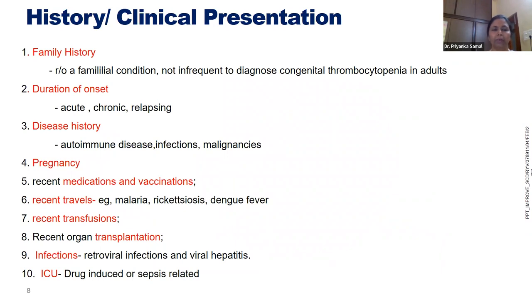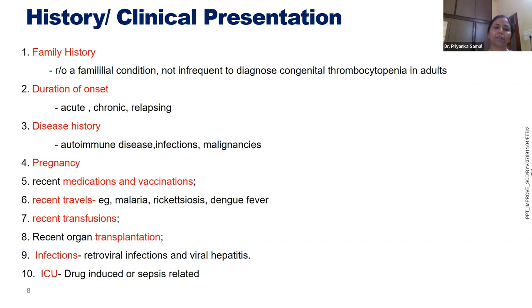After understanding pathogenesis, the next important step is understanding the clinical history of the patient — this is most important not only for thrombocytopenia but for any patient. Family history is important because some congenital thrombocytopenias run in families; for example, a girl may have her mother also presenting with menorrhagia and low platelet count as in von Willebrand disease.